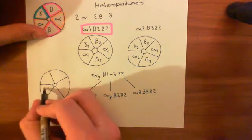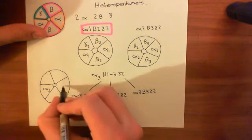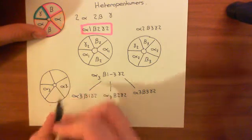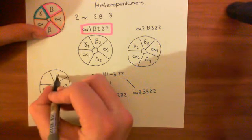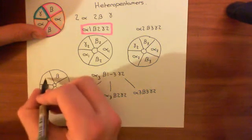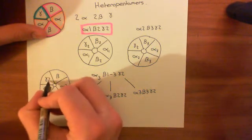We then have alpha-3 in this position here. We then have a beta subunit, whichever one it might be, beta-1, 2, or 3, and then we have the gamma-2.